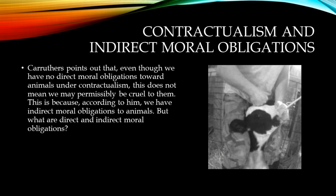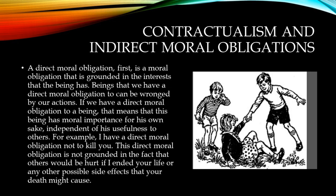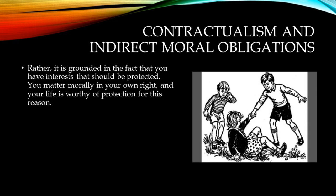Carruthers points out that, even though we have no direct moral obligations toward animals under contractualism, this does not mean we may permissibly be cruel to them. This is because we have indirect moral obligations to animals. A direct moral obligation is a moral obligation grounded in the interests that the being has. Beings that we have a direct moral obligation to can be wronged by our actions — they have moral importance for their own sake, independent of their usefulness to others. For example, I have a direct moral obligation not to kill you. This obligation is not grounded in the fact that others would be hurt if I ended your life, but rather in the fact that you have interests that should be protected. You matter morally in your own right.